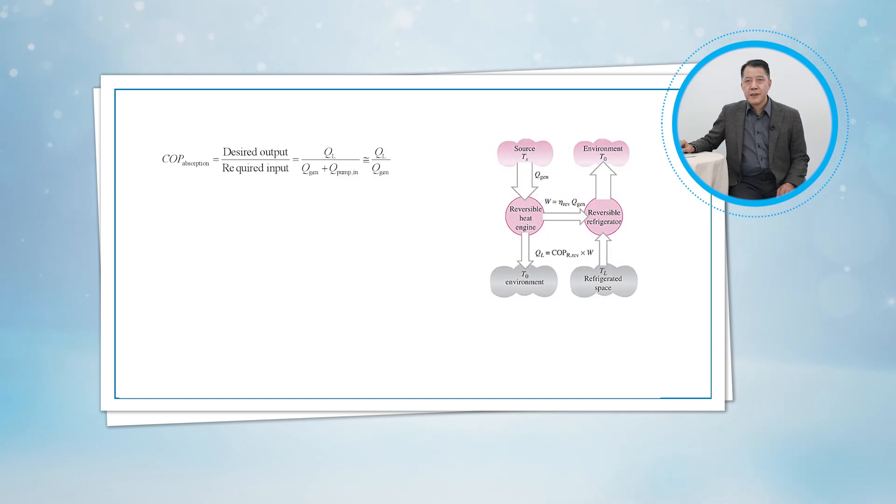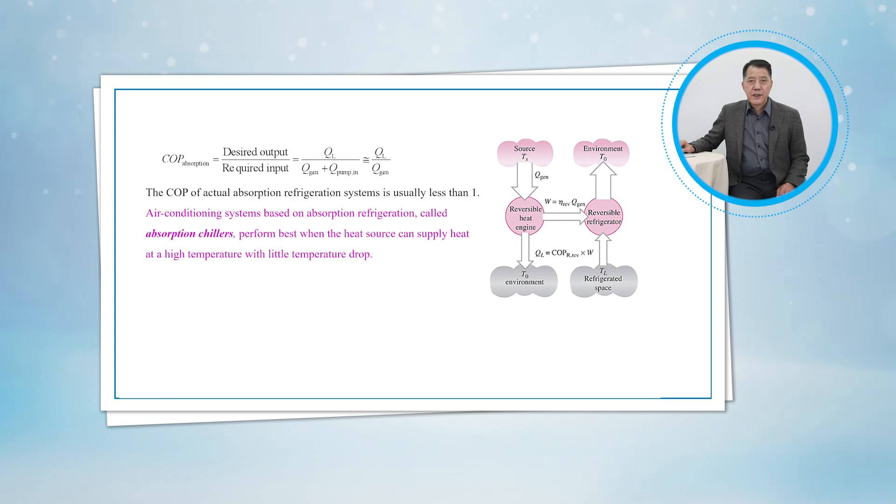The COP of absorption refrigeration systems is defined as the COP of actual absorption refrigeration systems is usually less than 1.